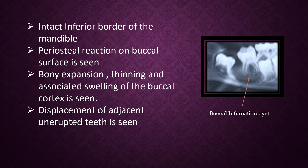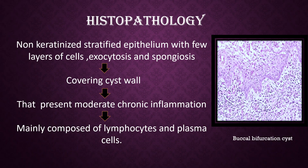Intact inferior border of the mandible. Periosteal reaction on the buccal surface is seen. Bony expansion, thinning and associated swelling of the buccal cortex is seen. Displacement of adjacent unerupted teeth is seen. Histopathology: Non-keratinized stratified squamous epithelium with few layers of cells. Exocytosis and spongiosis covering the cyst wall, presenting moderate chronic inflammation mainly composed of lymphocytes and plasma cells.